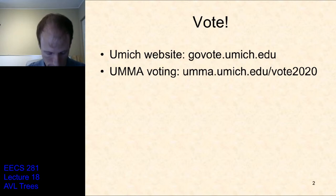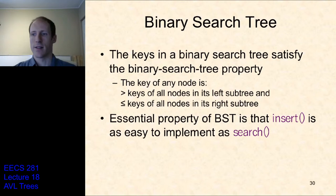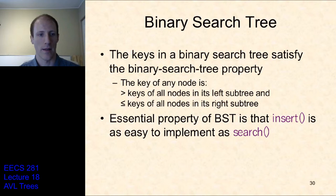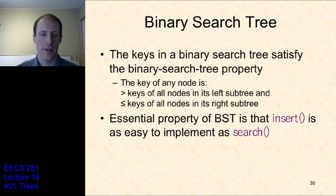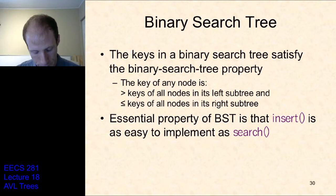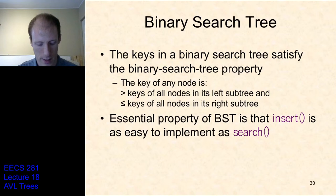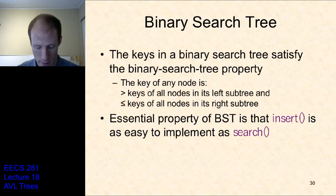Binary search trees are basically just a binary tree, but they also satisfy this property that says all the nodes in the left subtree will be less than the current node, and all the nodes in the right subtree will be greater. We went over algorithms for insert and search in a binary tree. The one thing we had left to talk about that we didn't get to last time was remove — how do we remove a node from a binary search tree?